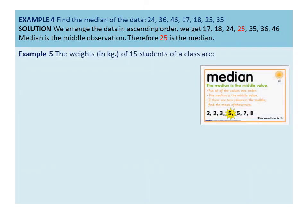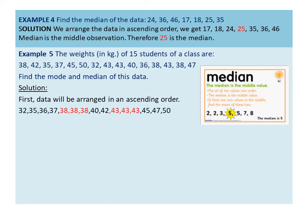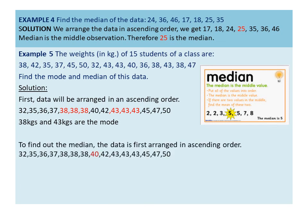One more example: the weights of 15 students in a class are given. Find the mode and median of this data. For finding the mode, we first arrange in ascending order. We find that 38 and 43 each appear 3 times, so 38 kg and 43 kg are both modes of the given data. To find the median, the data is arranged in ascending order. Since there are 15 students, the middlemost observation is the (15 + 1) ÷ 2 = 8th observation. The 8th observation is 40, therefore the median is 40.